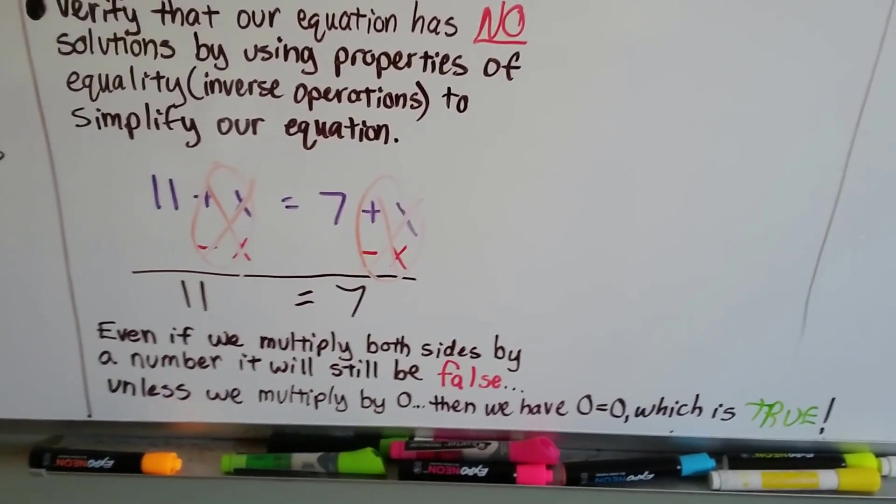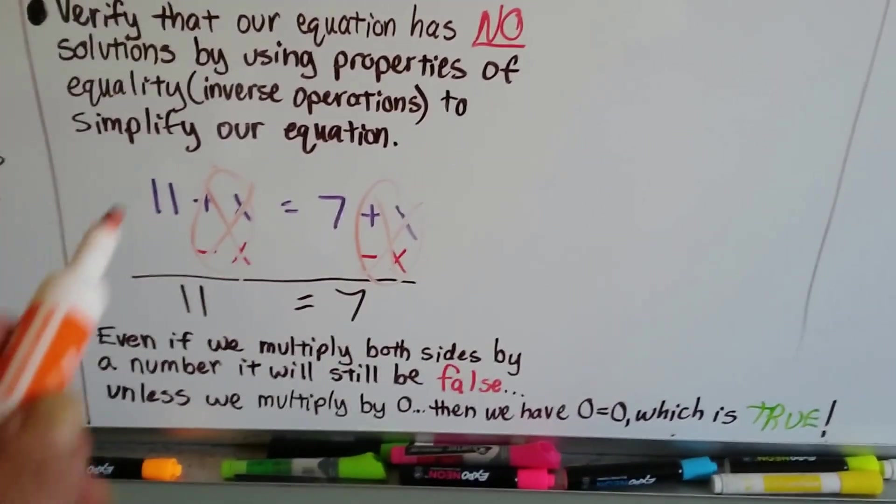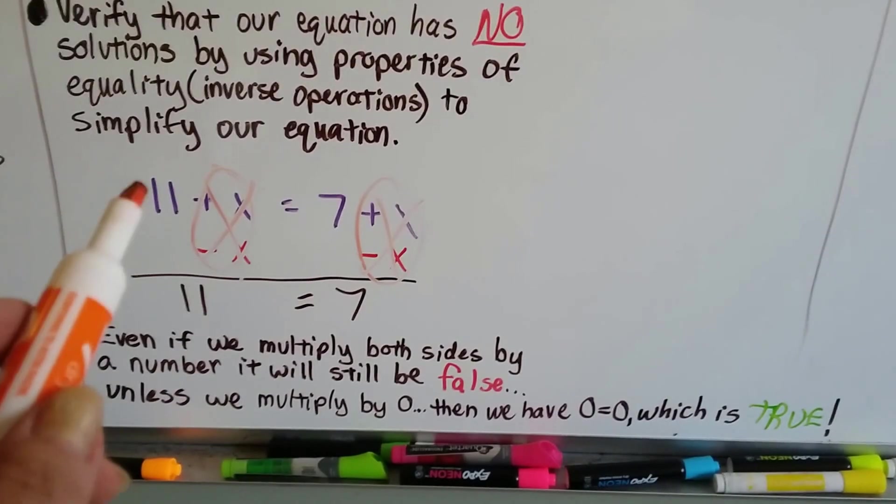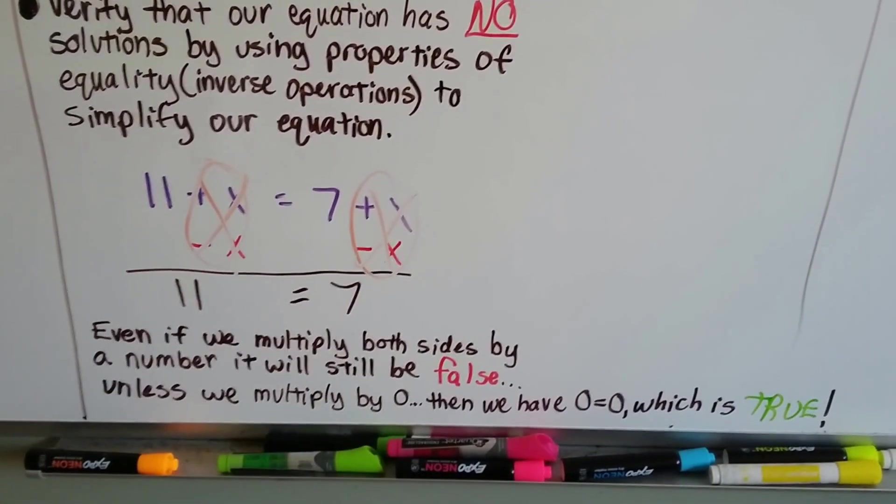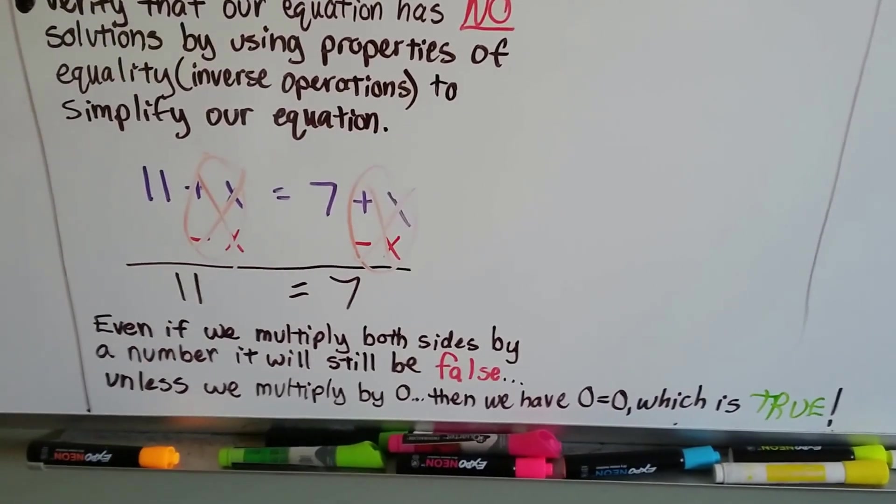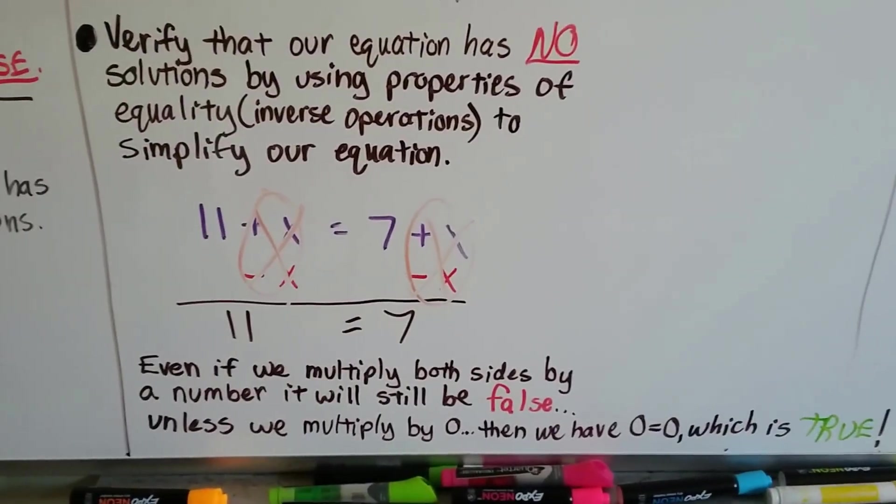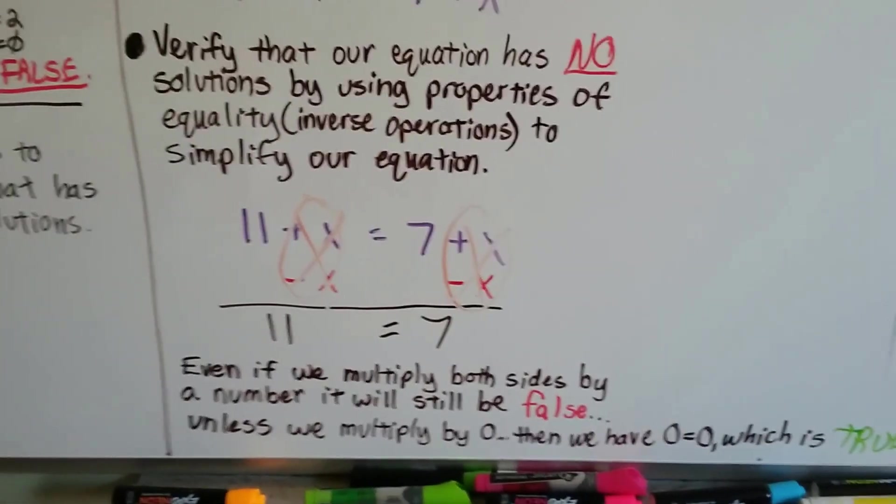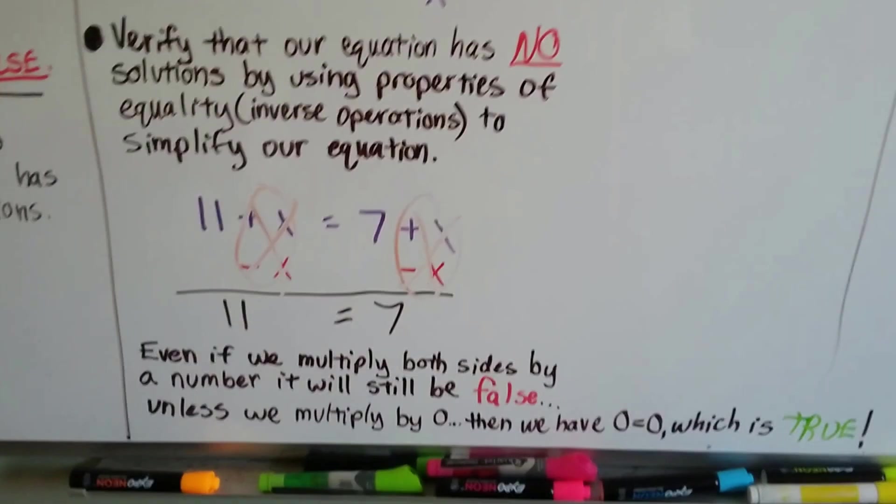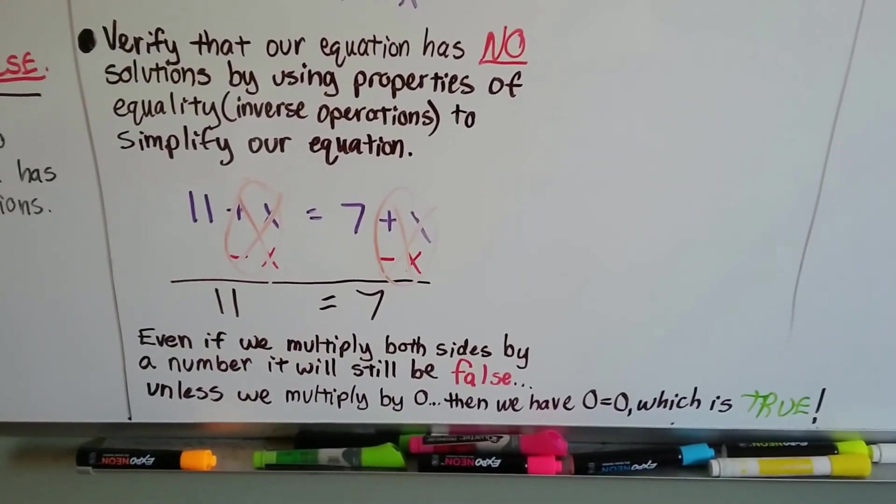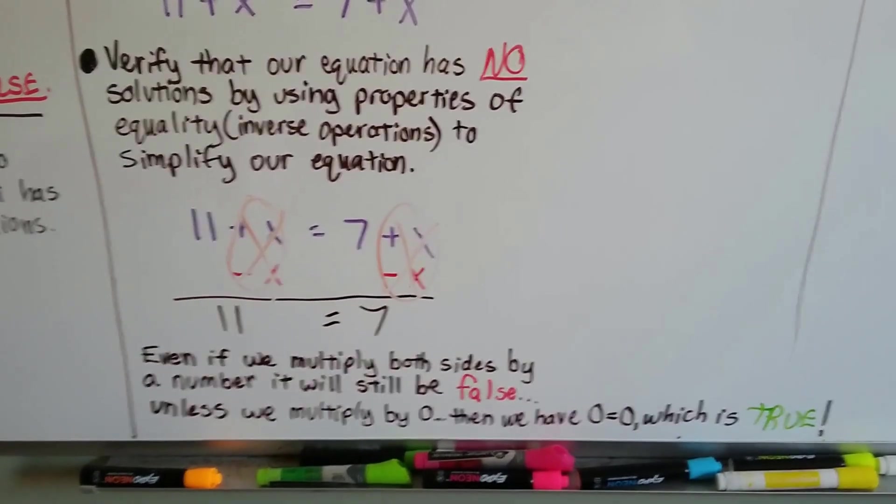So even if we multiply both sides by a number, it'll still be false, unless we multiply by 0. If I multiply both sides by 0, 11 times 0 is 0 and 7 times 0 is 0, we'd have 0 equals 0. And that's true. So if we're going to multiply by any number except the 0, it'll still be false. The only one that'll make it true is the 0.